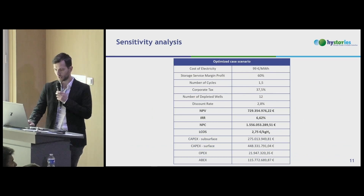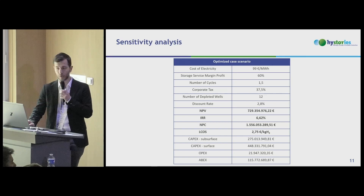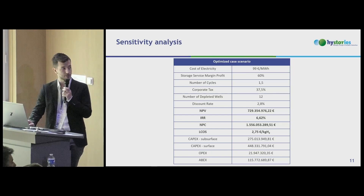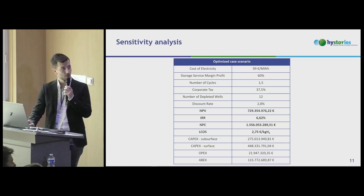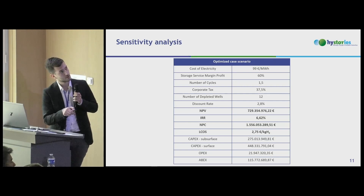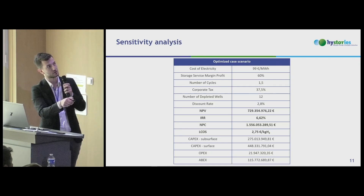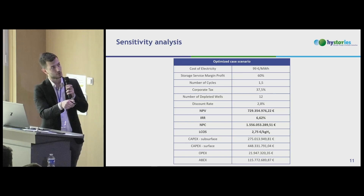To conclude, this is an optimized scenario from the sensitivity analysis. The levelized cost of storage for the baseline scenario was about 4 euros per kilogram. In this optimized case, we achieved a levelized cost of storage below 3 euros per kilogram of hydrogen, while keeping a positive net present value and a reasonable internal rate of return, even considering worst-case scenarios for both cost of electricity and corporate tax.